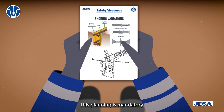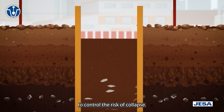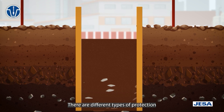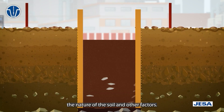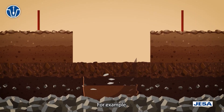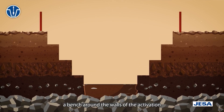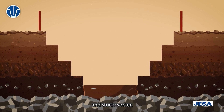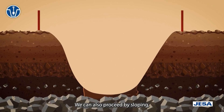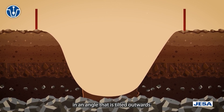This planning is mandatory. It is carried out by a competent person who will be responsible for these steps. To control the risk of collapse, there are different types of protection systems used depending on the depth of the excavation, the nature of the soil, and other factors. For example, we can set up an embankment slope per bench around the walls of the excavation to prevent debris from falling onto workers, or we can proceed by sloping — cutting the walls of the excavation at an angle tilted outwards.